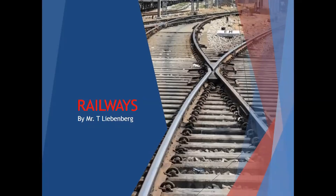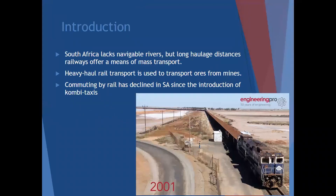Railways is quite an easy section, not too difficult. You can also look in your books, it's chapter eight. Why do we have railways, especially in South Africa? South Africa lacks navigable rivers - we can't really use boats on our rivers. But long haulage distances are required, and that's where railways offer a nice means of transport, especially mass transport.